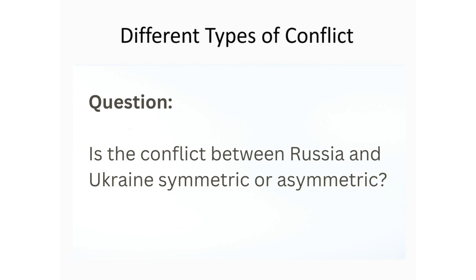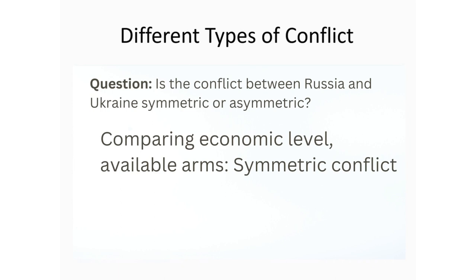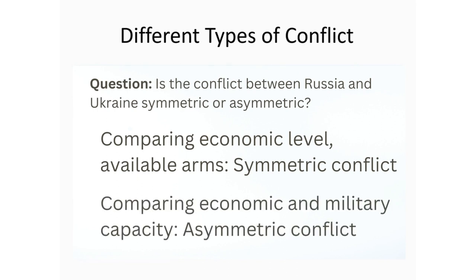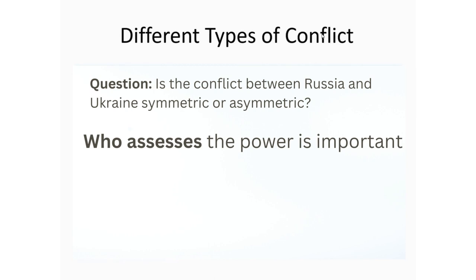Consider the conflict between Ukraine and Russia — is it symmetric or asymmetric? Both are independent states. If we look at economic level and available arms we have to compare those one by one. It may appear to be a symmetric conflict, but if we carefully check economic and military capacity, it may be asymmetric. Who decides power and who assesses power is important. Russia may appear more powerful because of its economy, size of territory, and military capacity. But from the UN perspective, both are independent sovereign states with equal rights — so it depends on who decides what is powerful.